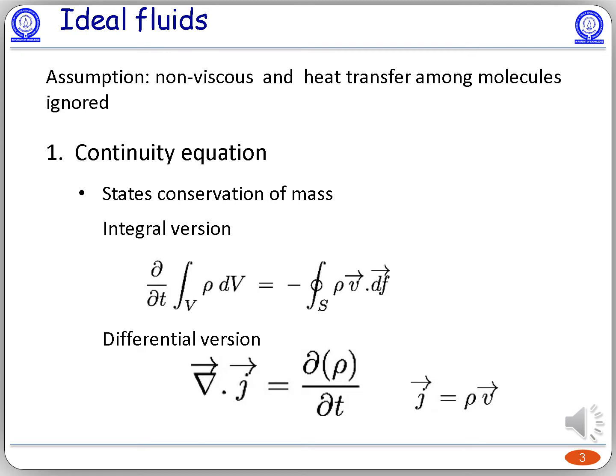The continuity equation for ideal fluids is nothing but the statement of conservation of mass. The integral version of the continuity equation can be interpreted as: take any closed surface in the fluid; the rate of increase of mass inside that closed surface is equal to the flux of mass entering that surface. The flux vector j equals rho v. Also, using Stokes' theorem, we can write the differential version of the continuity equation: del dot j equals del rho by del t.